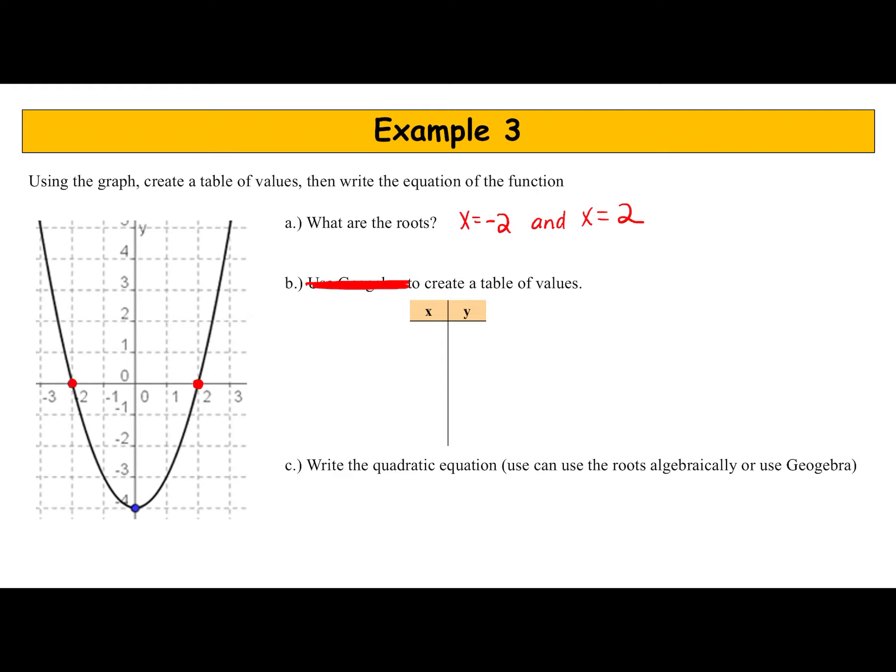Part b, use GeoGebra to create a table of values. We don't really need to, that's a typo. We don't need to use GeoGebra; we can just look at the graph and create a table of values. Let's pick some nice points here that we can use. I have negative 3, 5. Negative 2, 0. Negative 1, negative 3. 0, negative 4. 1, negative 3. 2, 0, and 3, 5. There's my table of values.